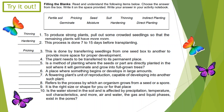Number 4: The plant needs to be transferred to its permanent place. The correct answer is indirect planting.